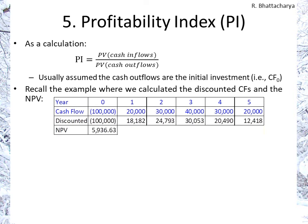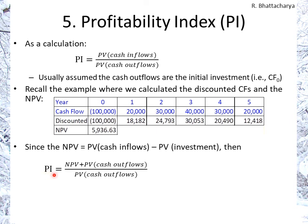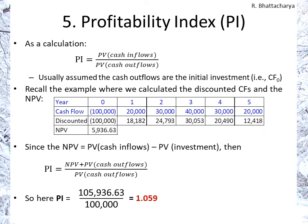Looking at our previous example, the net present value was $5,936, and given that our initial cash outflow was $100,000, the total present value of cash inflows — the numerator for the profitability index — would be $5,936 plus $100,000, which is $105,936. So the profitability index equals the net present value plus the present value of the cash outflows, divided by the present value of the cash outflows. Our result is 1.059, meaning for every dollar we invest, we receive $1.059 back in present value terms.